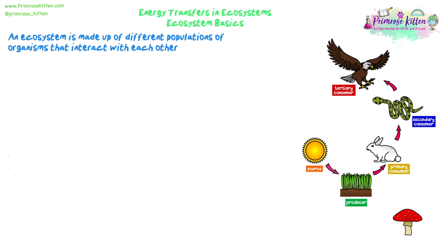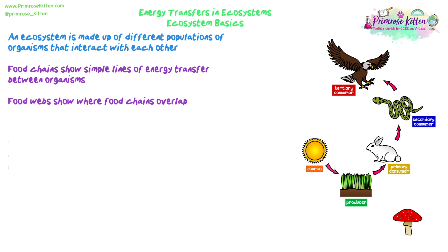The main thing we're looking at here is feeding relationships. Food chains show simple lines of energy transfer between organisms. The arrows in a food chain show the transfer of energy from one organism to another, or from the sun to plants. Food webs are a more complicated version, showing how different food chains overlap and interconnect. We're just going to look at a food chain for now to make it a little bit easier.